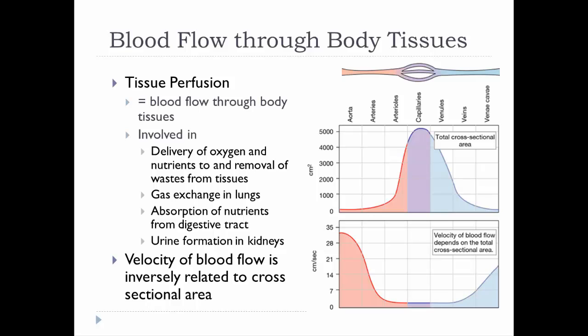Tissue perfusion is blood flow through body tissues, thinking in terms of delivery of oxygen and nutrients and removal of waste to particular tissues, gas exchange in the lungs, nutrient absorption in the digestive tract, or urine formation. Basically everywhere blood is needed and nutrient or waste exchange takes place, we need to regulate that blood flow depending on the tissue's needs.